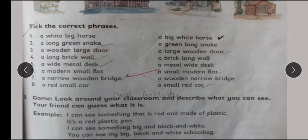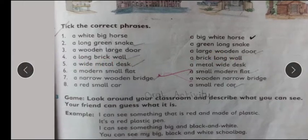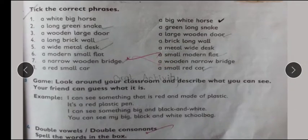A wooden large door, ya a large wooden door? Yeh hummare pas sahih hoga: a large wooden door. A long brick wall, ya a brick long wall? Yeh nahi hoga — a long brick wall thik hai. A wide metal desk, ya a metal wide desk? Yeh waala hummare first one thik ho ga. A modern small flat, ya a small modern flat? A small modern flat wala thik ho ga.